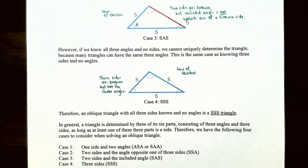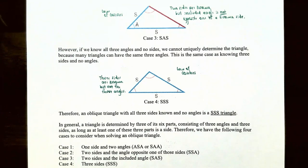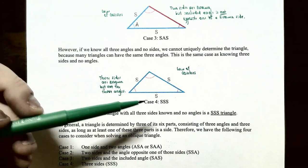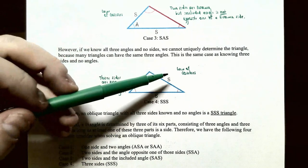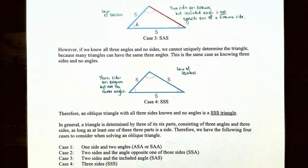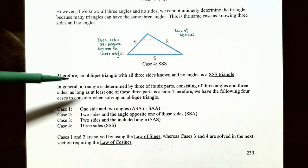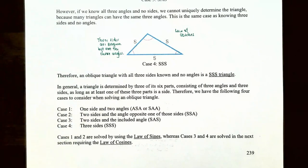If we know all three angles but no sides, we cannot uniquely determine the triangle because many triangles can share the same angles with different side lengths. This is similar to knowing three sides and no angles — case four, an SSS or side-side-side triangle. We'll use the law of cosines to solve this type of oblique triangle as well in the next section.